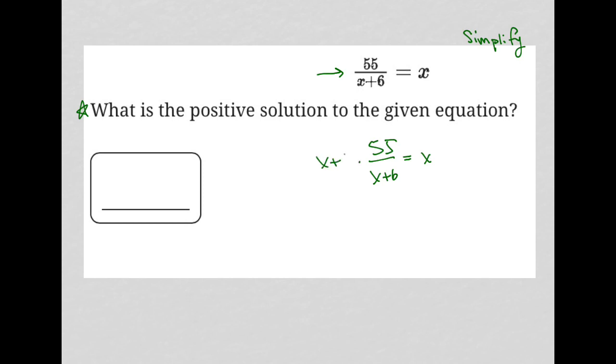I'm going to multiply both sides by x plus 6. So it cancels out here. I'm left with 55 equals x squared plus 6x.